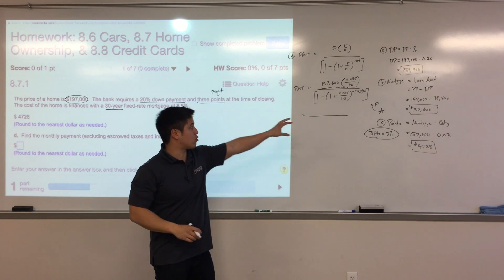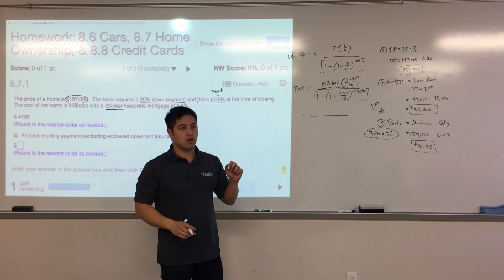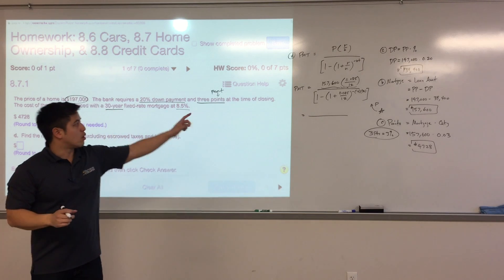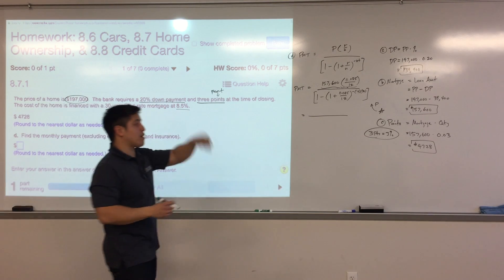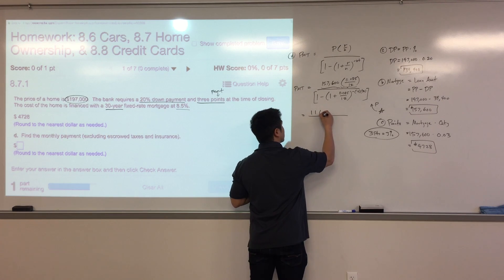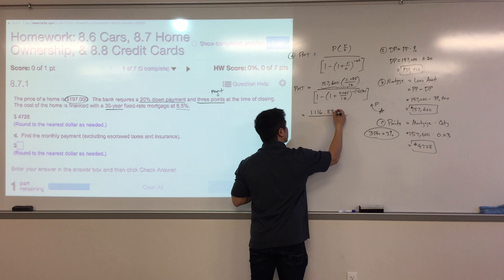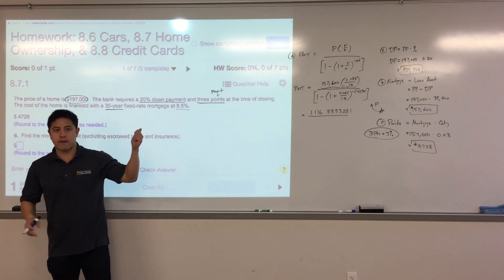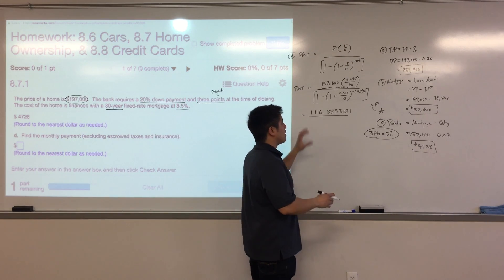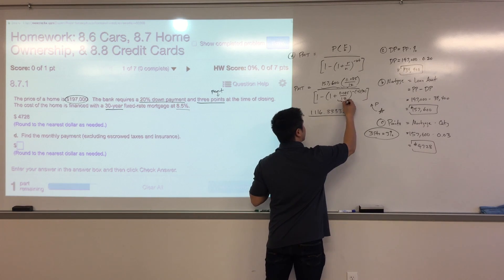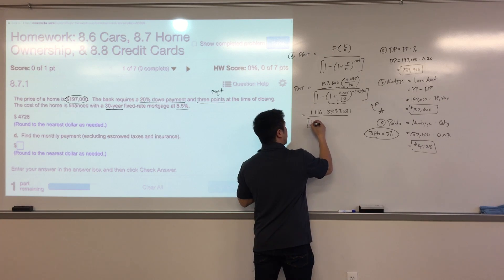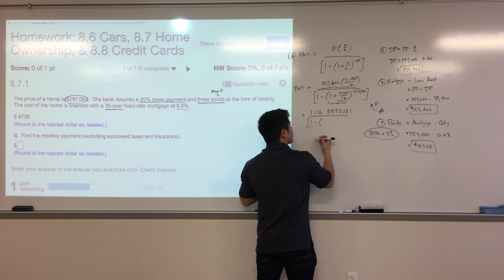For the denominator, calculate 0.085 ÷ 12 + 1, which gives approximately 1.00708333. Then raise that to the negative 360 power. To enter a negative exponent on your calculator, use the Y-to-the-X button, enter 360, then use the negative sign button to make it negative, and hit equals.